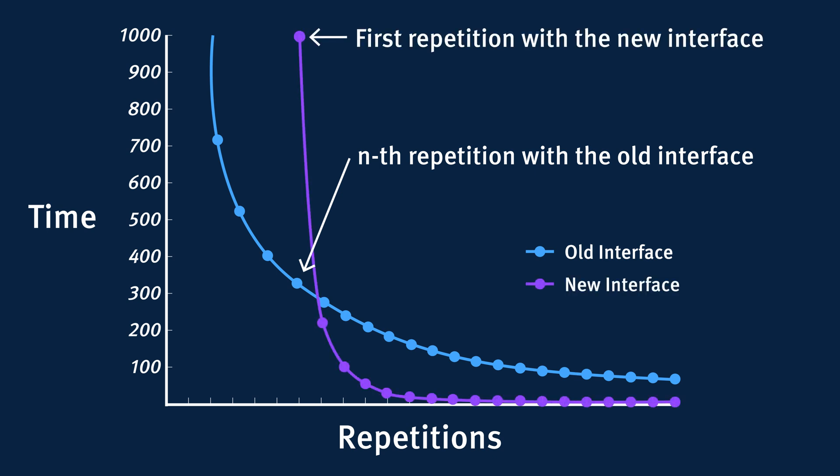But when you introduce a new interface, you send users back to repetition number one. Their efficiency is poor, and they have to spend time to learn the new interface when they could have used the old interface instead and accomplished the task a lot faster. It's a loss of productivity. So it's not just that change is hard and people don't like new things — they really are less productive and less efficient at first with a new interface or a new design pattern. They need quite a few repetitions in order to learn it.